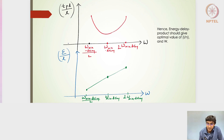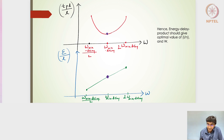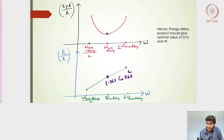The overall delay per unit length has a minimum value at optimum W, and is higher for any other W. The energy per unit length is 1.866·Cw·VDD² at minimum-delay optimum W. If the width is reduced, energy per unit length decreases; if the width is increased to 2W (twice the optimum), energy increases. So there is a clear delay-energy tradeoff when varying the repeater width around the optimum.